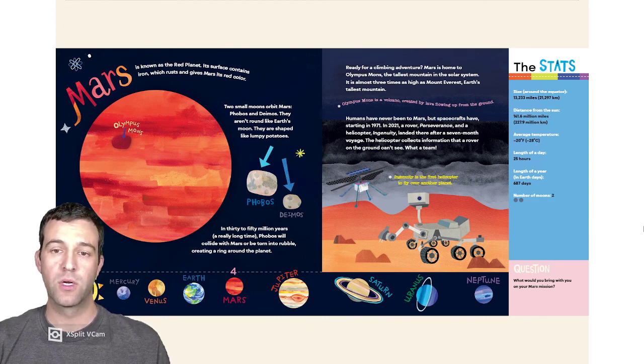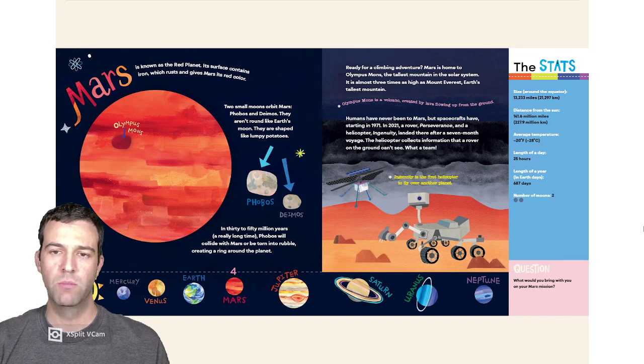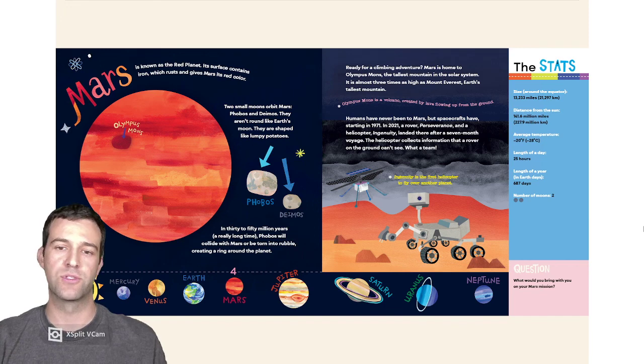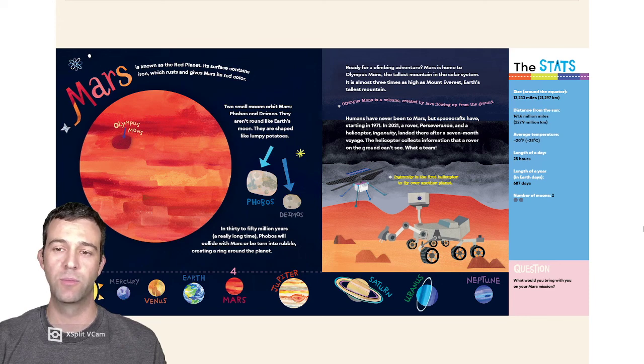Ready for a climbing adventure? Mars is home to Olympus Mons, the tallest mountain in the solar system. It is almost three times as high as Mount Everest, Earth's tallest mountain. Olympus Mons is a volcano created by lava flowing up from the ground.